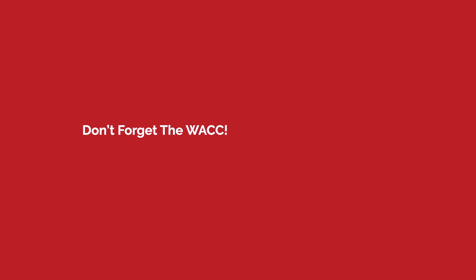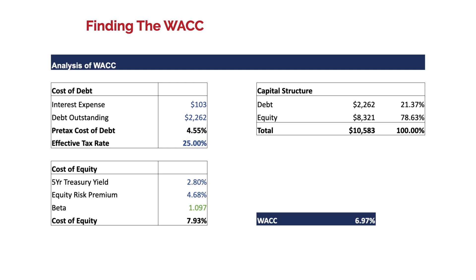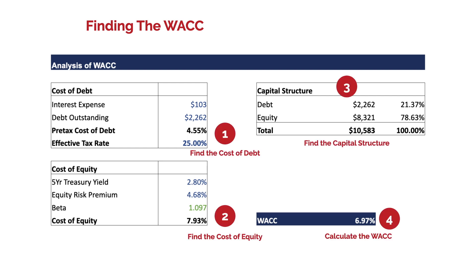Before we can discount anything, we need to figure out the WACC, our discount rate. I tend to have a few different tables in Excel: cost of debt, cost of equity, and capital structure. For the cost of debt, we account for the interest expense and the outstanding debt, divide to get a pre-tax cost of debt, and then account for the effective tax rate. For cost of equity, you take the five-year treasury yield, get the equity risk premium from Damodaran, find your beta — which is covariance over variance — and then find your cost of equity. Then we account for capital structure: the percentage of debt and the percentage of equity. We take a weighted average to get the WACC. So: one, cost of debt; two, cost of equity; three, capital structure; four, calculate the WACC.